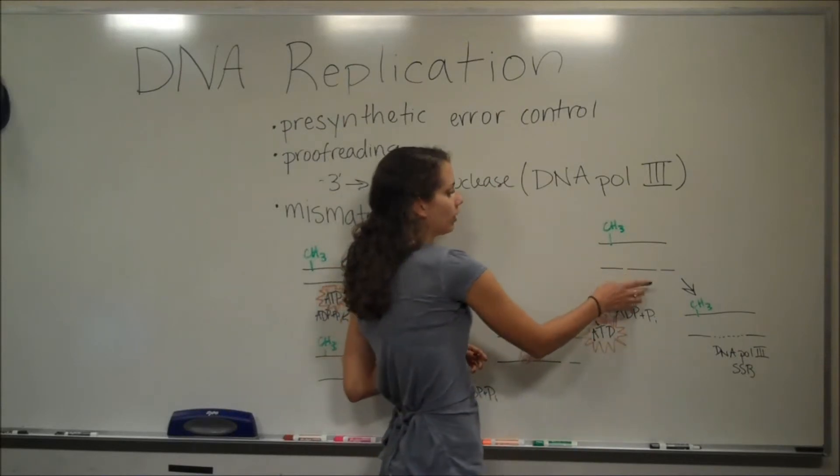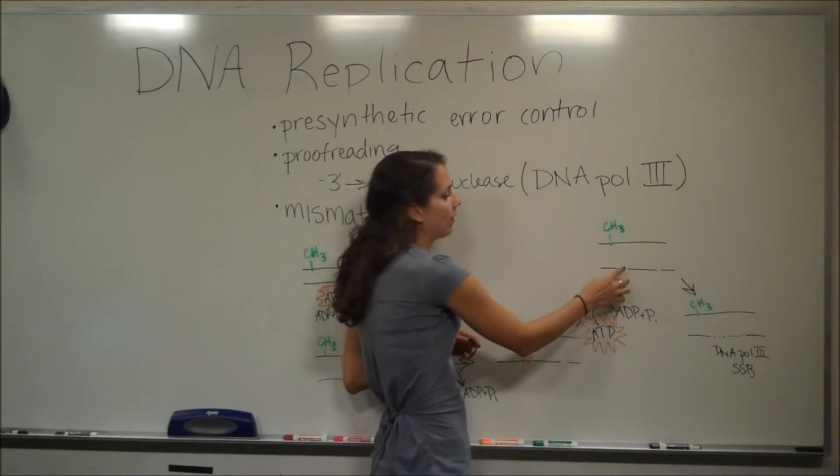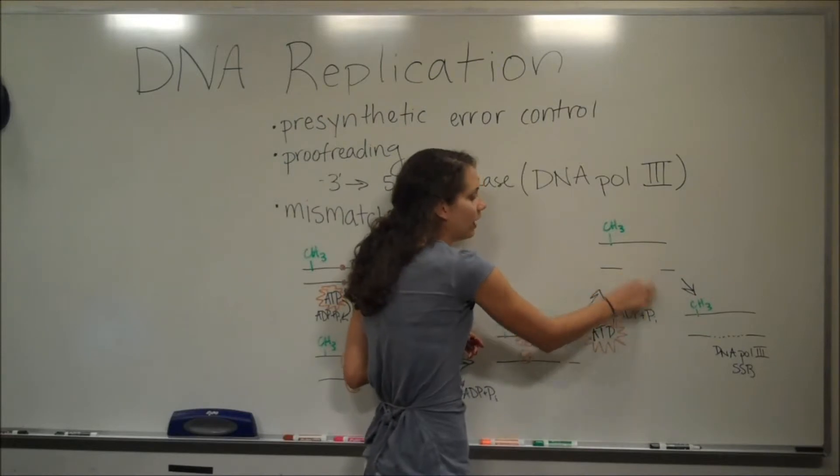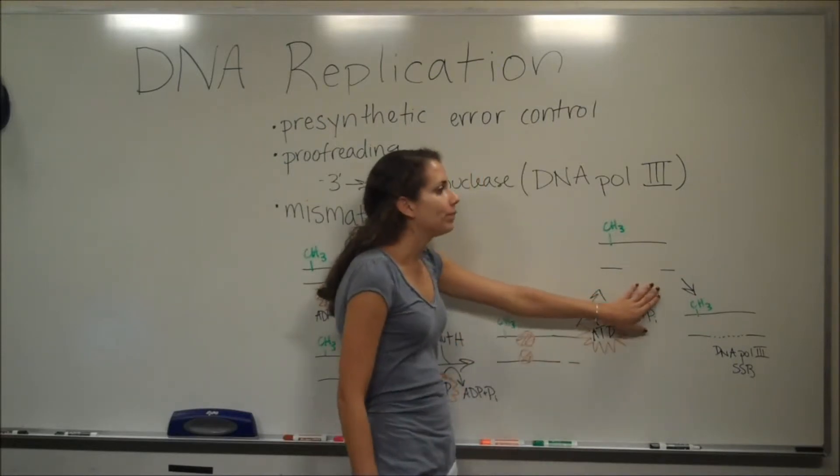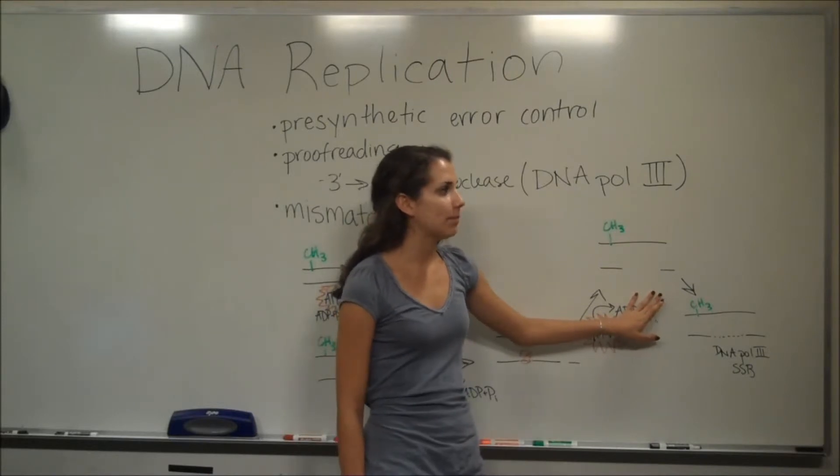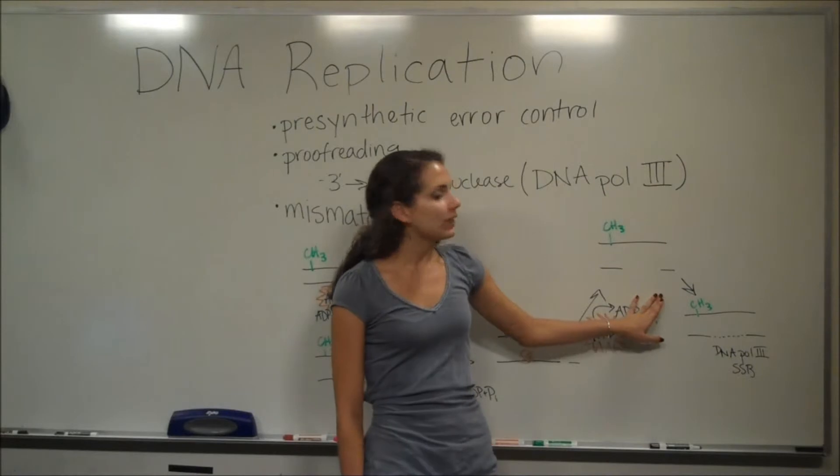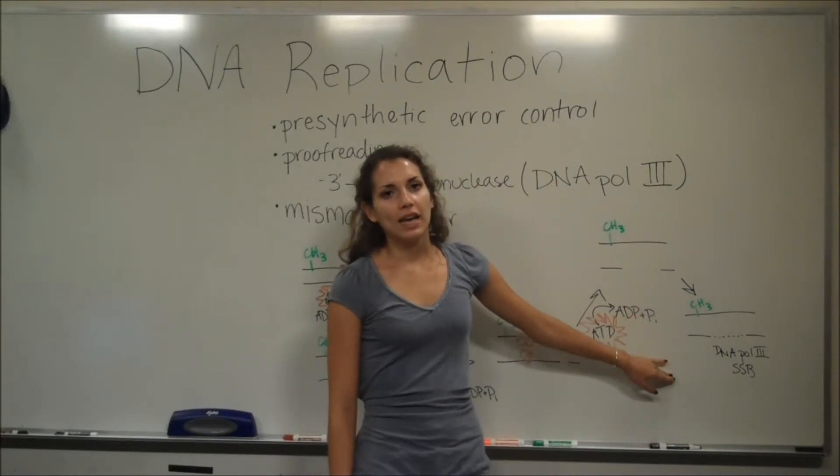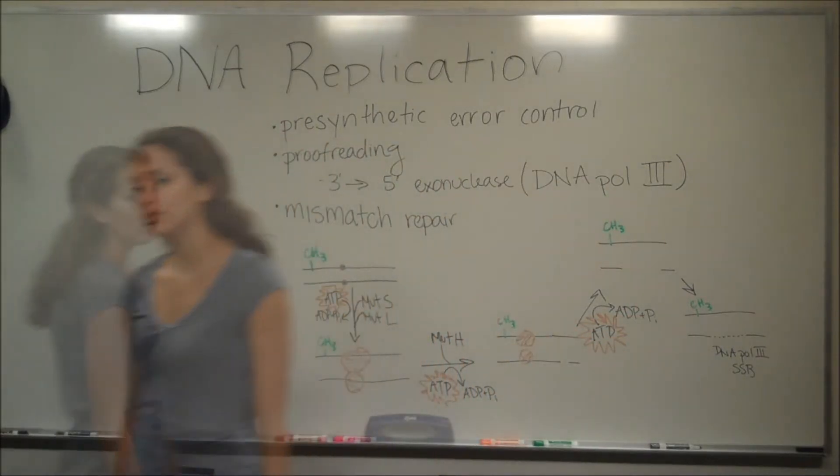And then this whole little portion is not held by anything now, so it's just going to leave. So now there's a gap in the daughter strand, and DNA polymerase 3 and SSB are going to come in and synthesize DNA in the gap that was left. Hopefully they'll do it correctly this time. And that's how the mismatch repair system works.